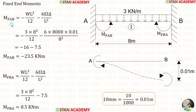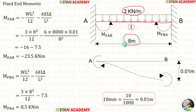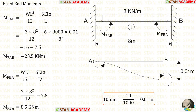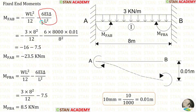Now let us find the fixed end moments. In span AB, we have a UDL of 3 kN/m for the full span. The formulas for fixed end moments are −WL²/12 and +WL²/12. Since support B sinks by 10 mm, we also need the fixed end moments due to sinking, using the formula 6EIδ/L². If sinking occurs on the right side, this moment will be negative; if on the left side, it will be positive.